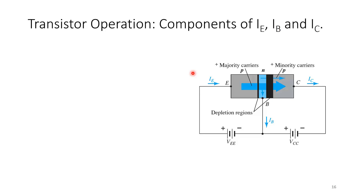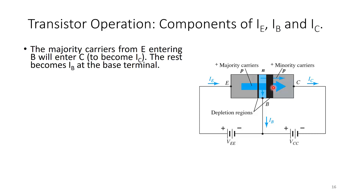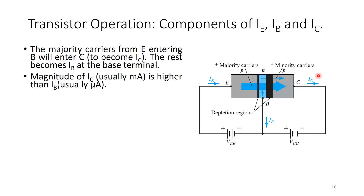Transistor operation and components of IE, IB, and IC: majority carrier holes travel from IE, are injected into the base, diffuse across the base, and are swept into the collector to form IC. IB also has components from minority carriers or those that escape before crossing to the collector. The majority carriers from the emitter enter the base; most reach the collector to become IC, and the rest exit at the base terminal as IB. IC is typically in milliamps and significantly higher than IB, which is typically in microamps.